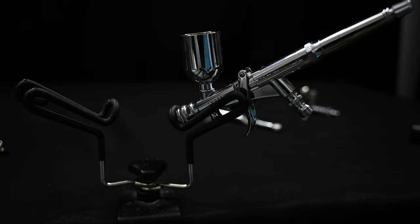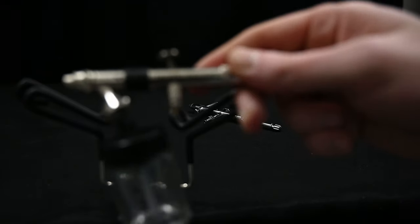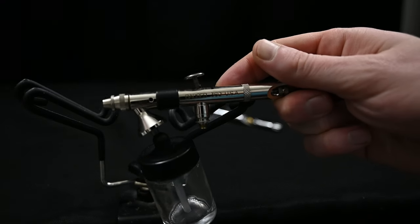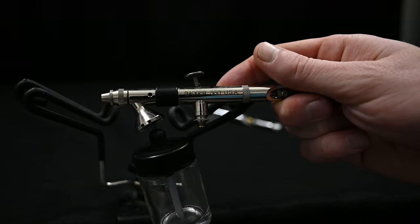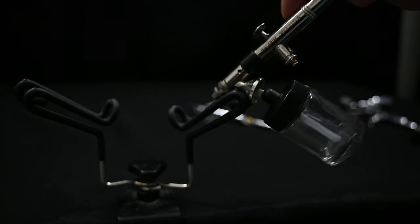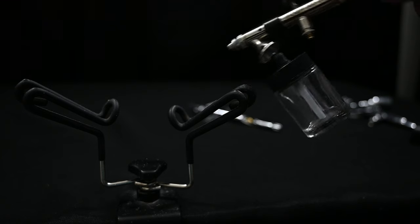It's held in very securely, and you can do this with or without the hose connected. This one right here is one of the craziest airbrushes I own. It's the Badger 360. It's a very cool design. It's both gravity-fed and siphon-fed, and it has this large cup at the bottom.